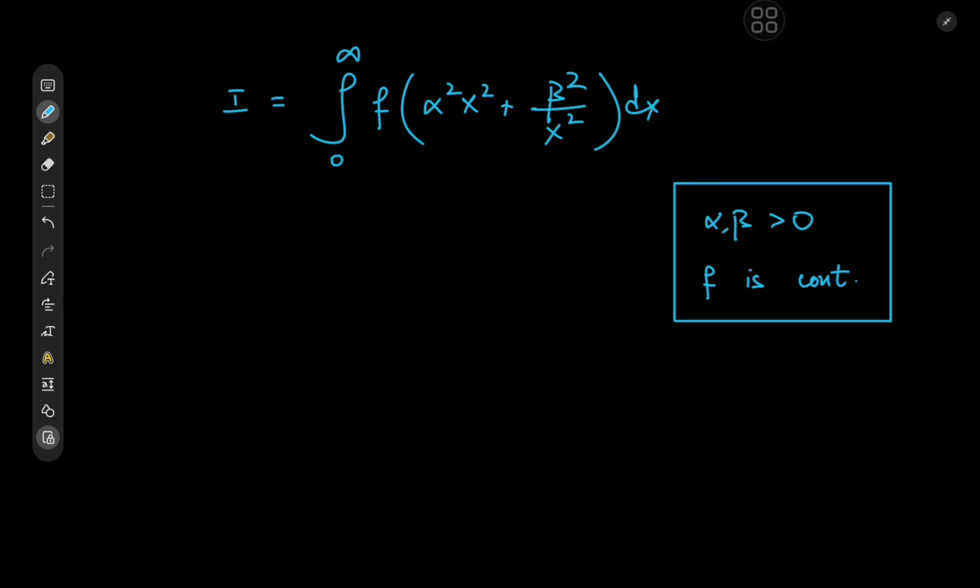Greetings folks, Kamal here, but this time with a very interesting integration result featuring the integral from 0 to infinity of f of alpha squared x squared plus beta squared divided by x squared dx, where alpha and beta are both positive parameters and f is a continuous function. Now provided that the integral converges, we can figure out a very nice simplified version of the integral that is pretty cool, and will apply it to a concrete example later on in the video.